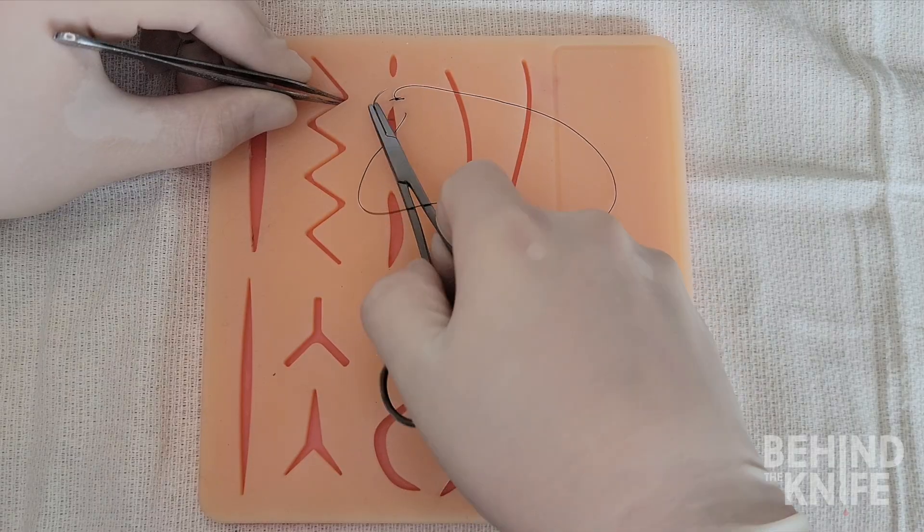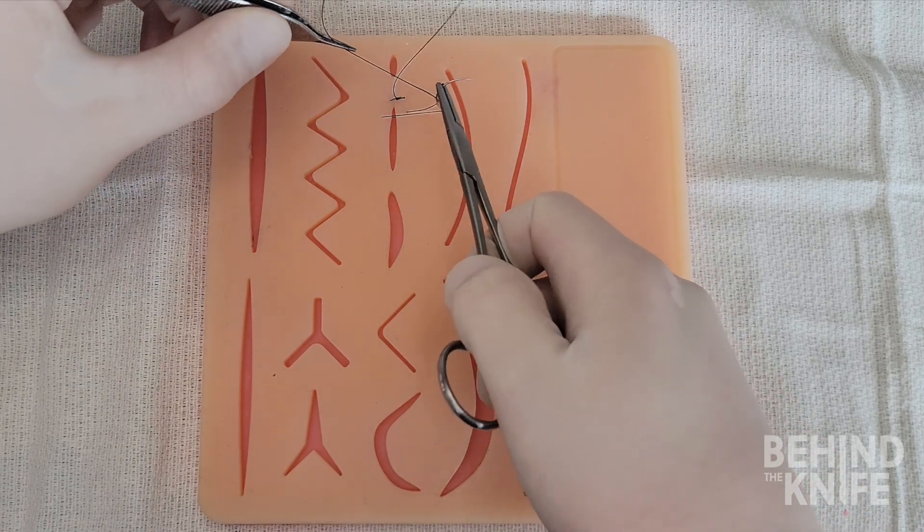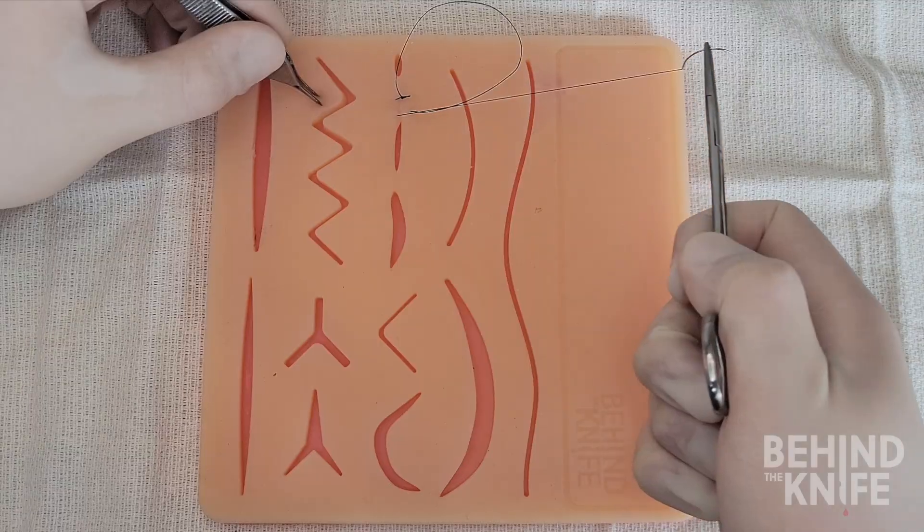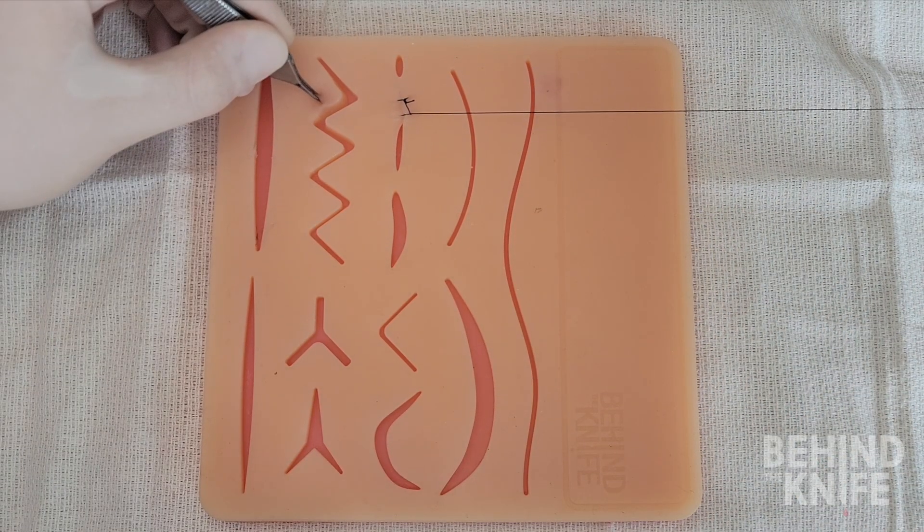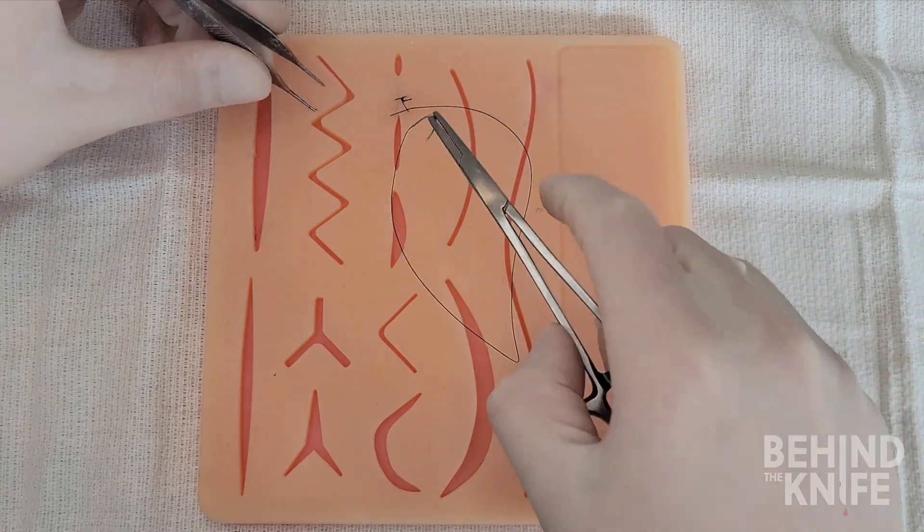After you grasp the needle you will then pull laterally which will lead to the suture not only running across the wound but also running down parallel to the incision. What this does is lock each loop of suture in place.